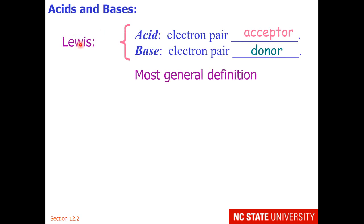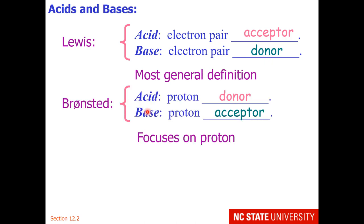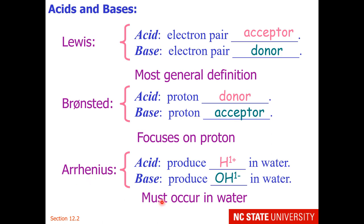In summary for acids and bases: the Lewis acid definition is the most general — acids are electron pair acceptors and bases are electron pair donors. The Brønsted definition focuses on the proton, where the acid is a proton donor and the base is a proton acceptor. The Arrhenius definition focuses on water — the acid is a proton donor, and the base produces hydroxide in water.